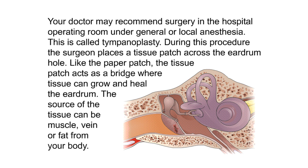Your doctor may recommend surgery in the hospital operating room under general or local anesthesia — this is called tympanoplasty. During this procedure, the surgeon places a tissue patch across the eardrum hole. Like the paper patch, the tissue patch acts as a bridge where tissue can grow and heal the eardrum. The source of the tissue can be muscle, vein, or fat from your own body.